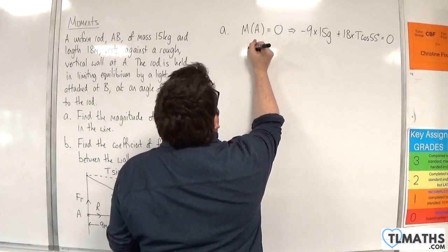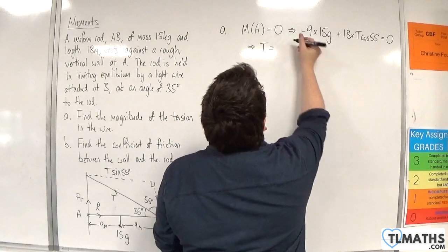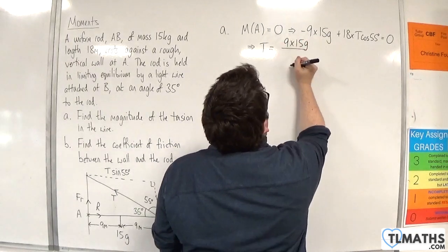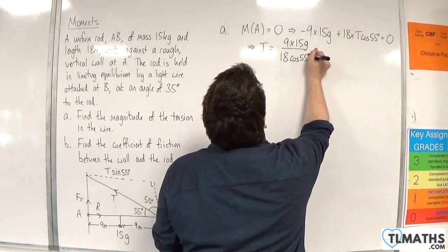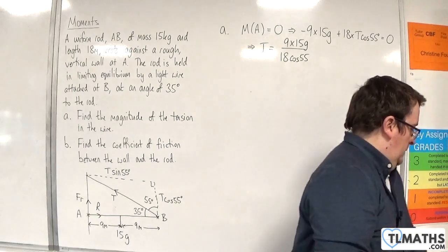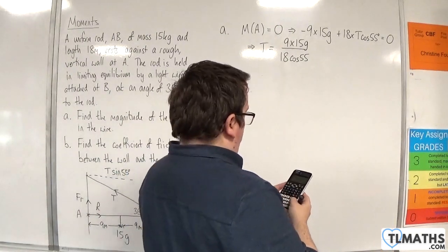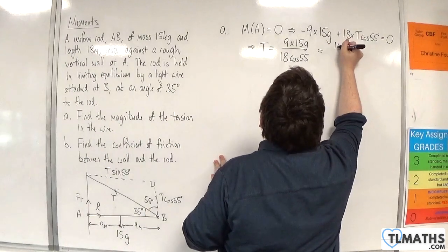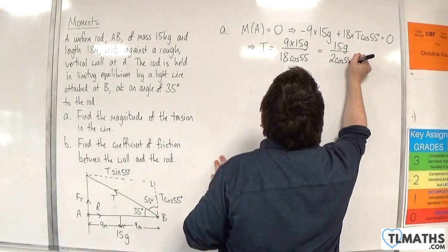So T is going to be equal to 9 times 15g over 18 cosine 55. So 9 times 15 divided by 18, which is 15 halves. So you could write that as 15g over 2 cosine 55.